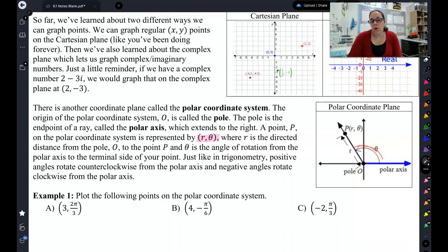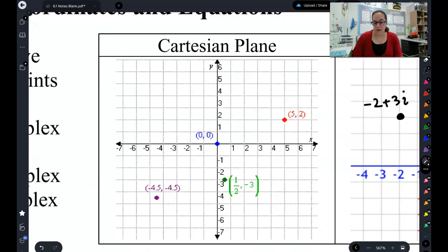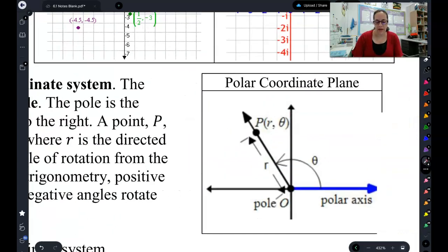Polar coordinates are most helpful for jobs like pilots or people who do sailing or in submarines. Because if you're a pilot and I tell you there's an object at 5 comma 2 from you, that doesn't really help very much. Instead, it's a lot more helpful to know there's an object 3 miles away from you that is 90 degrees in front of you.